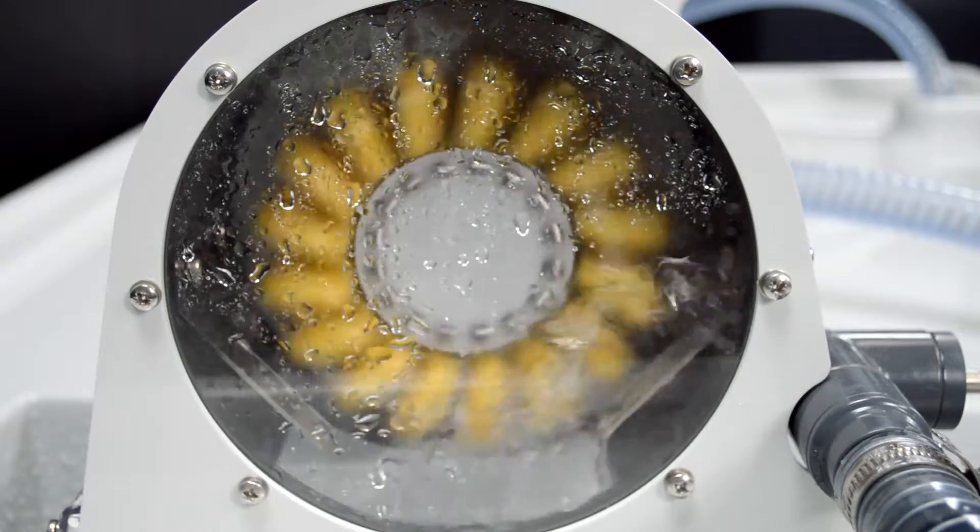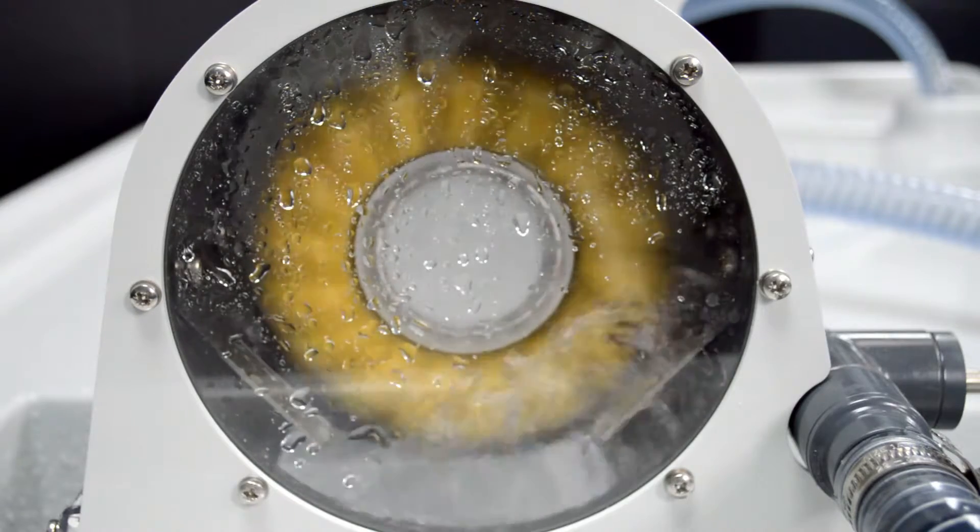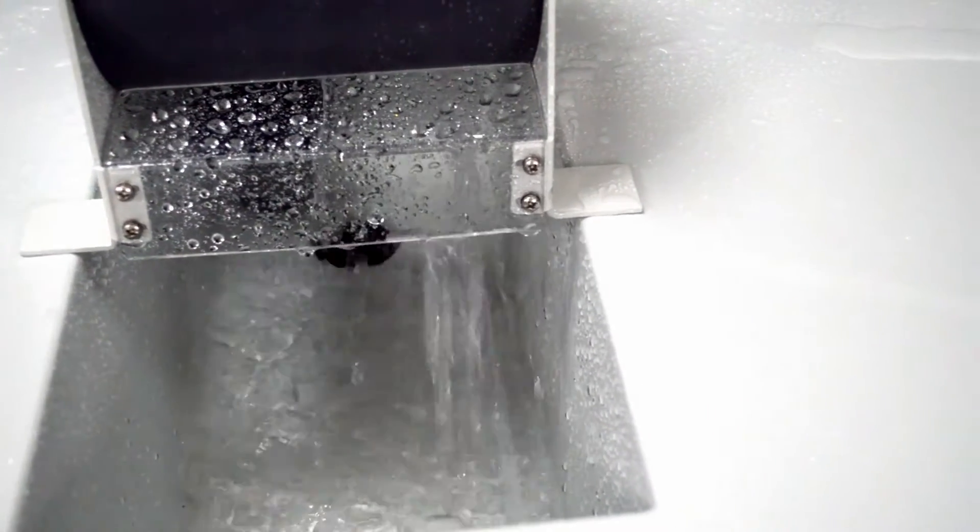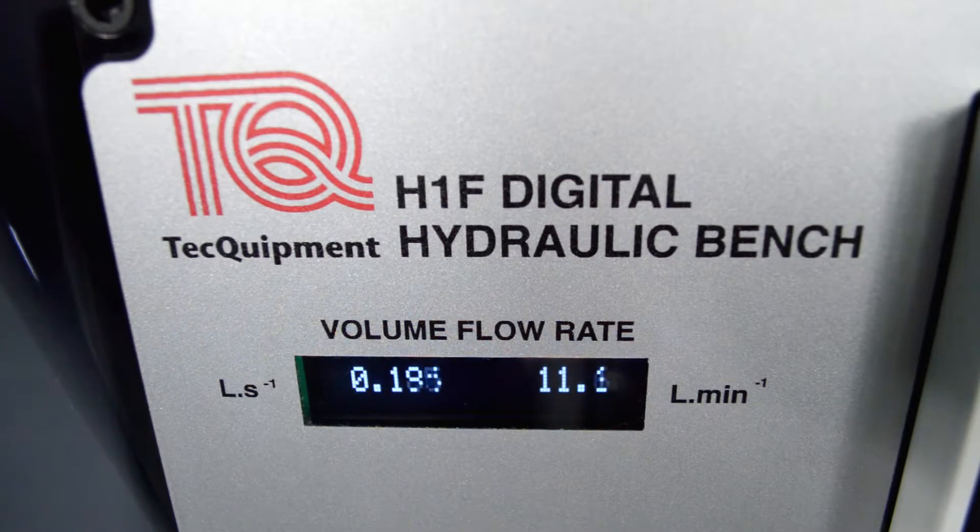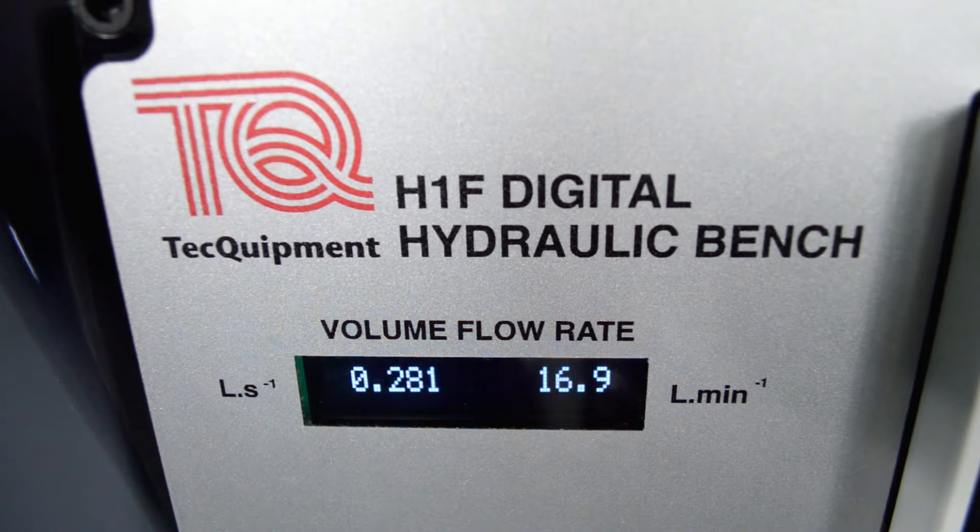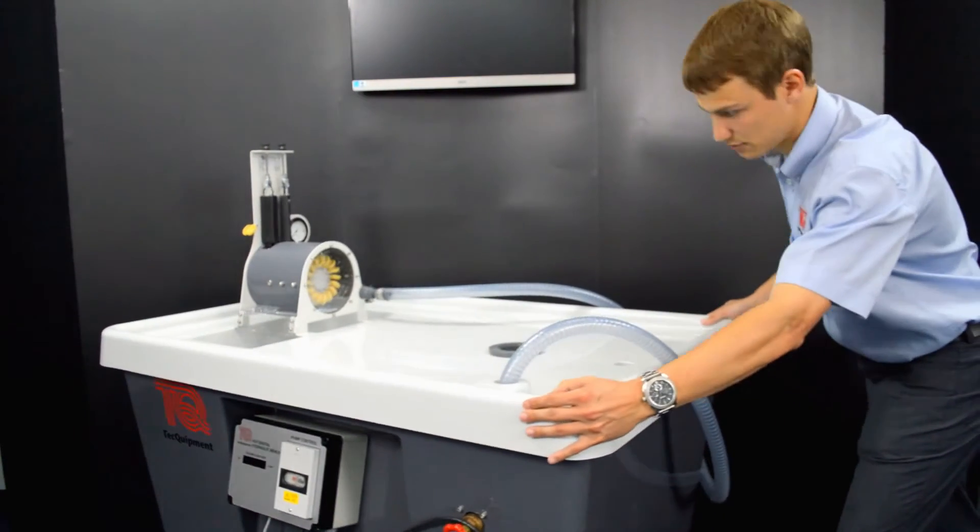The Pelton turbine works with Tech Equipment's digital hydraulic bench which provides a recirculating water supply and has a digital display measuring the flow rate in litres per second and litres per minute. It is completely mobile for flexible laboratory use.